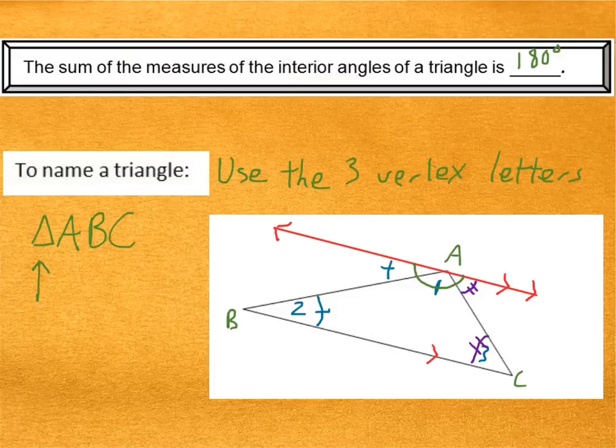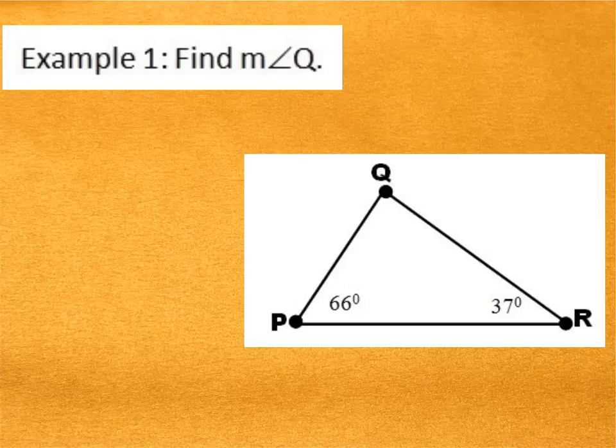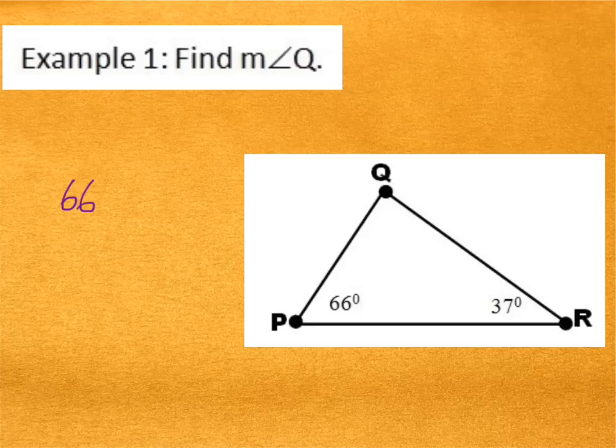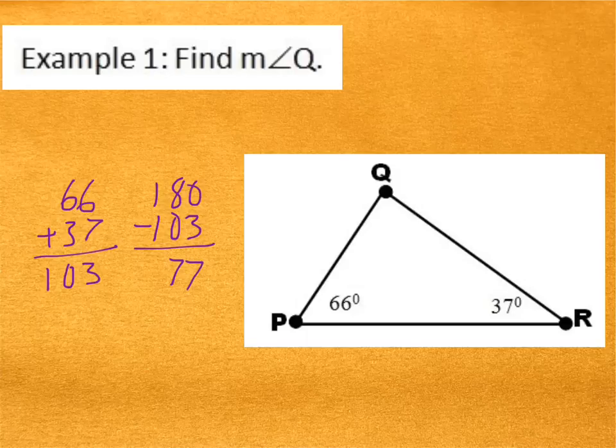Alright, so let's just look at a few examples. We're going to start off with a really basic one that you guys could probably already do. Here it says, find the measure of angle Q. Well, because the angles in a triangle add up to 180 degrees, this is as simple as adding the 66 and the 37. That would make 103. Then, subtracting to figure out how much is left from 180. That would be 77 degrees. So measure of angle Q is 77 degrees.